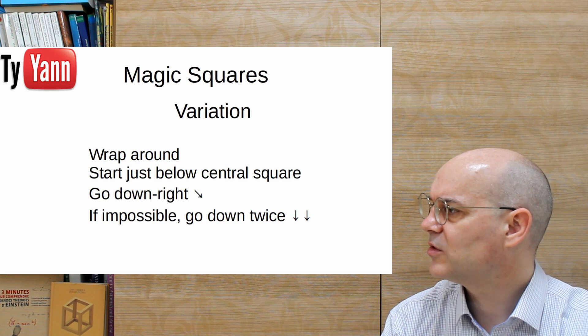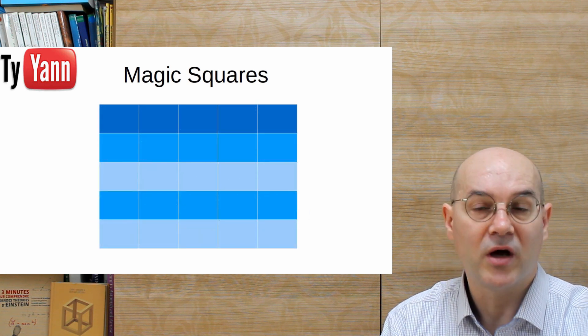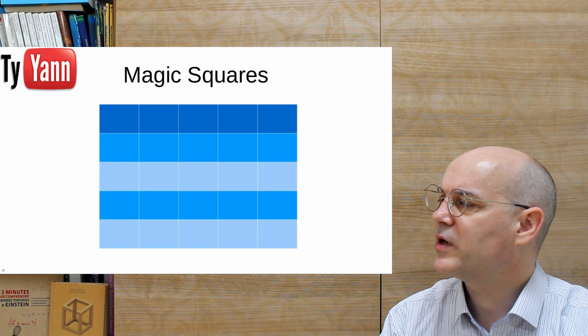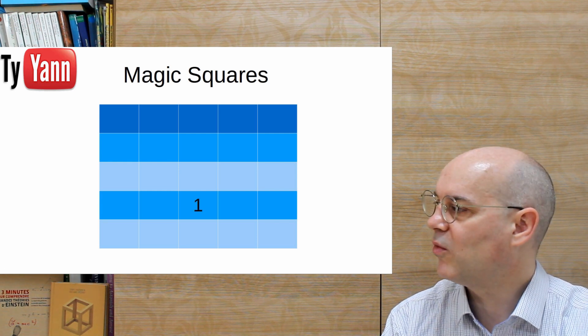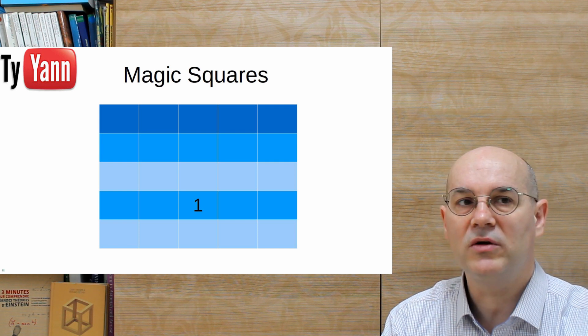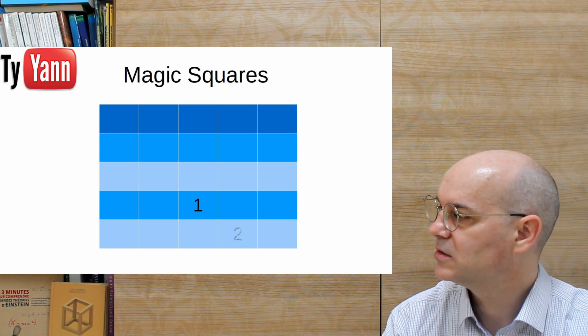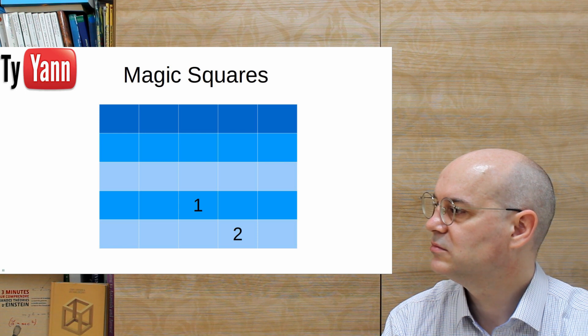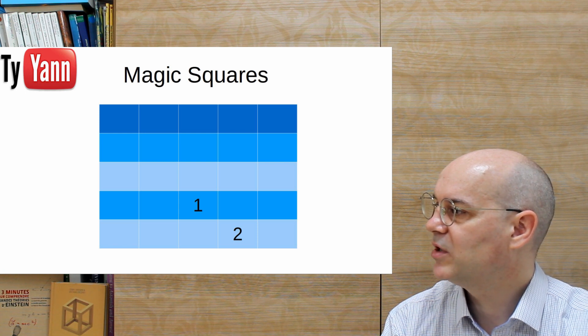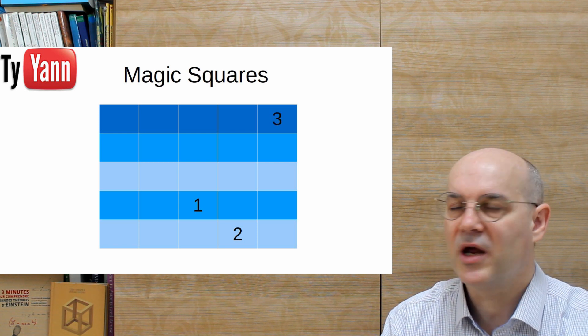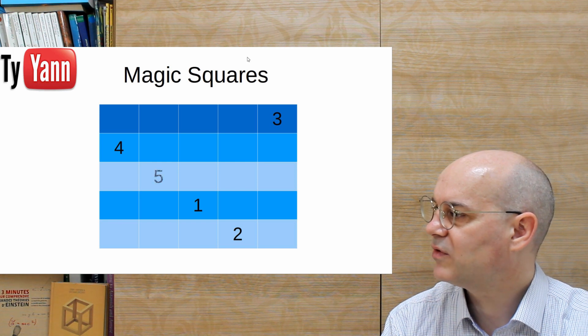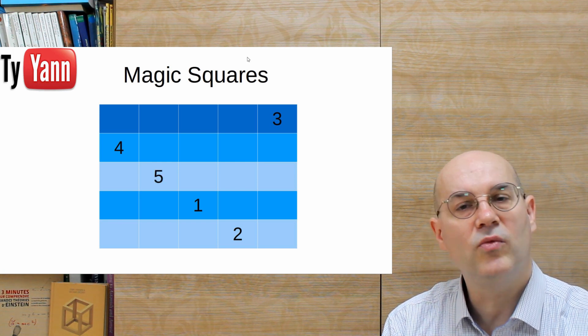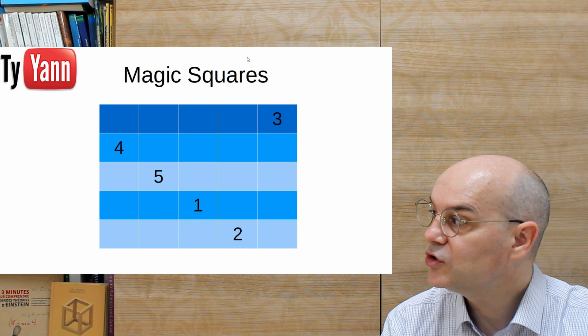So we start with our magic square, 5 by 5. I'm going to go first with the square just below the central square, here, you put your 1, and then go downright. So we'll put the 2, and wrapping around, we'll put the 3 at the corner up there, keep going, 4, there, and 5. And once the 5 is there, we cannot put the 6, so we go down twice.